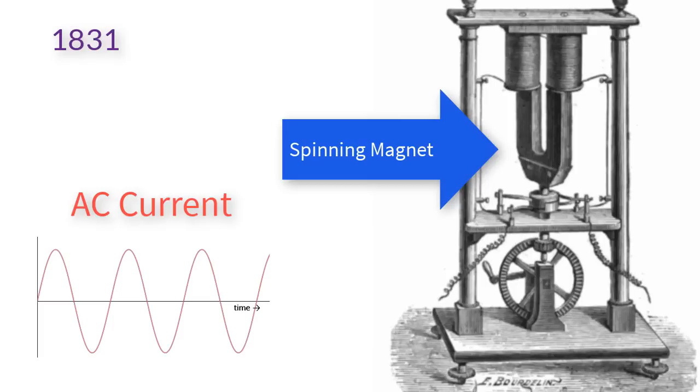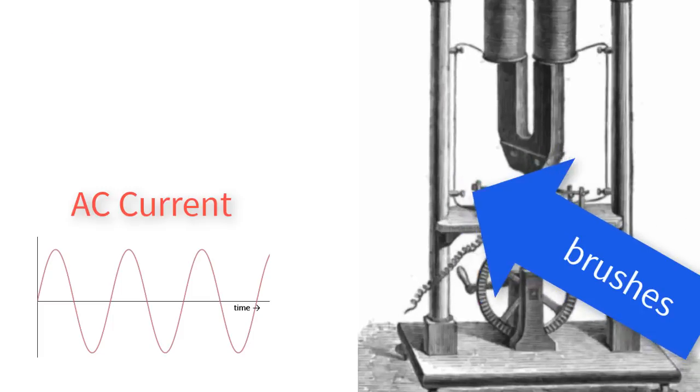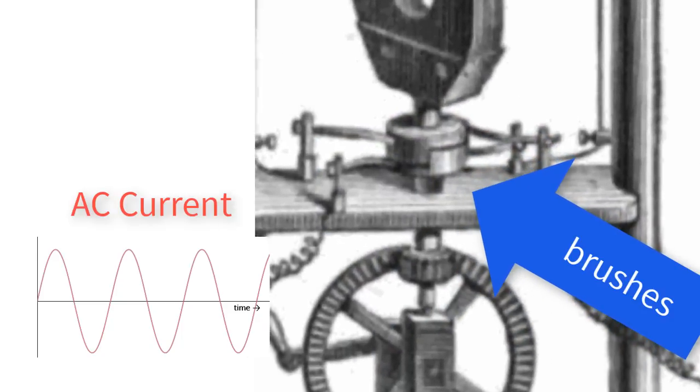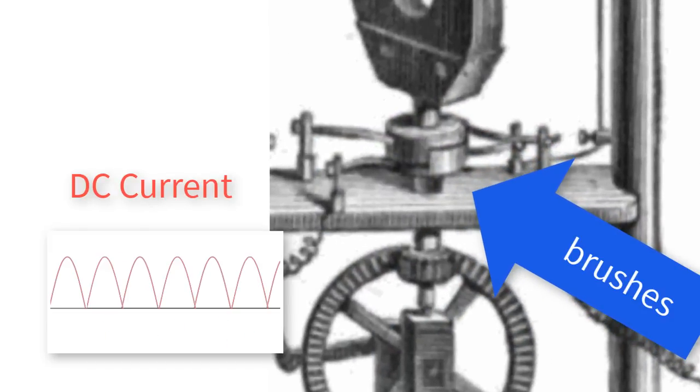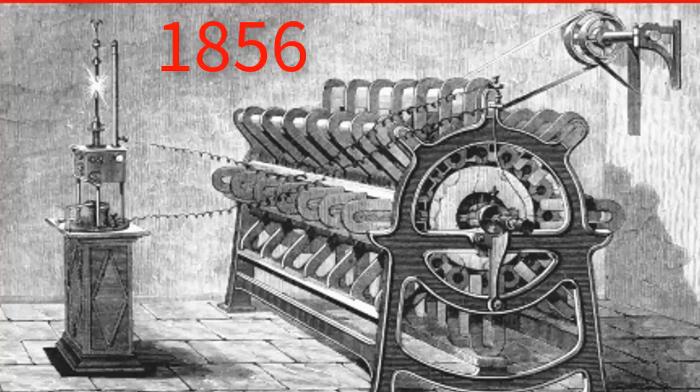However, at the time, they thought alternating current was useless and used brushes to force the alternating current into pulsed direct current, or DC. 25 years later, in 1856, scientists removed the brushes and successfully used AC to light lamps.